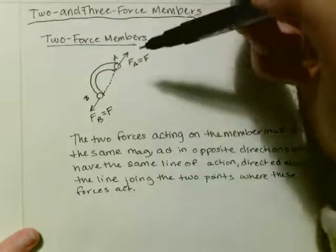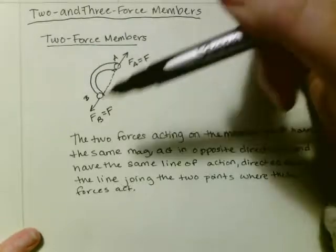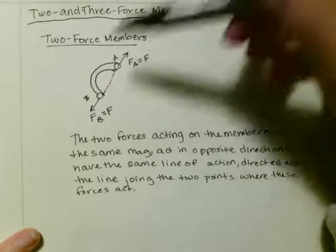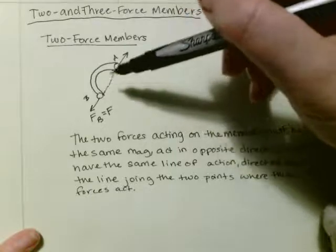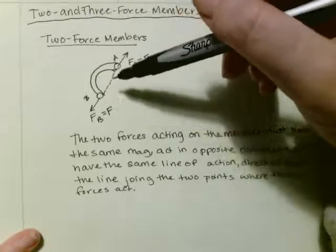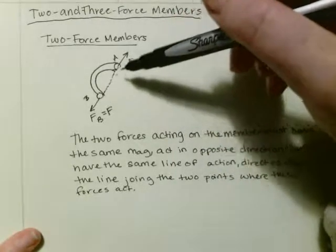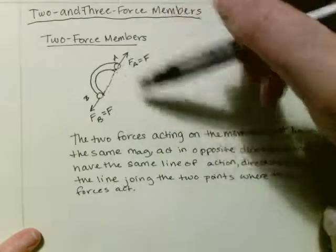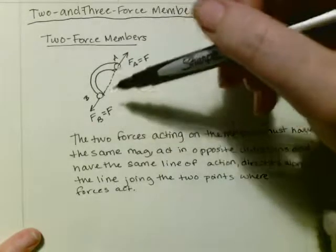So this is a two-force member because the magnitude is the same of F, and they are in opposite directions and have the same line of action, which is directed along the line joining the two points where the forces act.